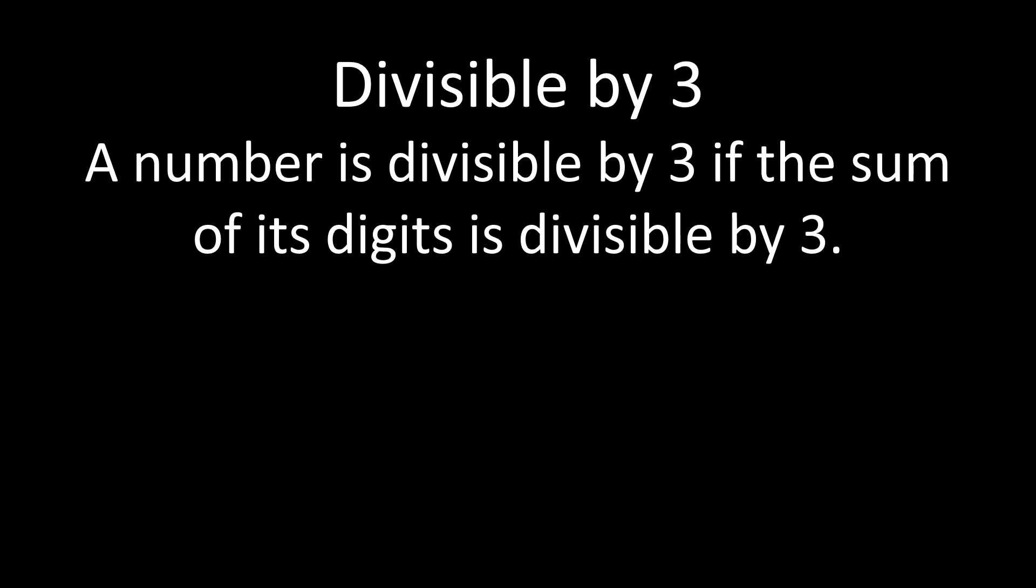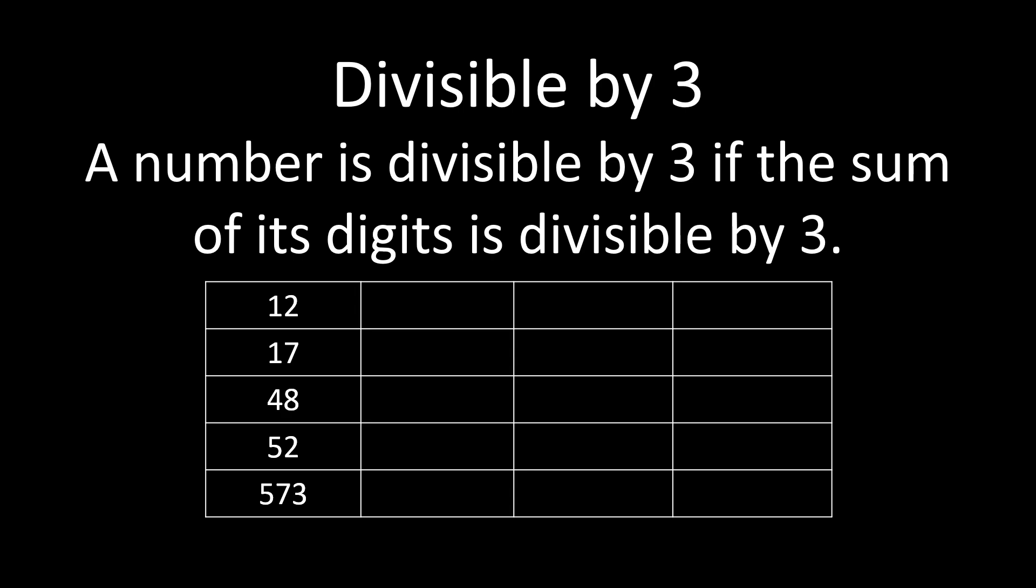To determine if a number is divisible by 3, you first have to add up the digits. And if the sum of the digits of the number is divisible by 3, then the number is divisible by 3. Let's look at a couple of examples. If we look at the number 12, I'm going to add the two digits, so the 1 and the 2. 1 plus 2 is 3. Then I have to determine if 3 is divisible by 3. 3 divided by 3 is 1. That means that 12 is divisible by 3.